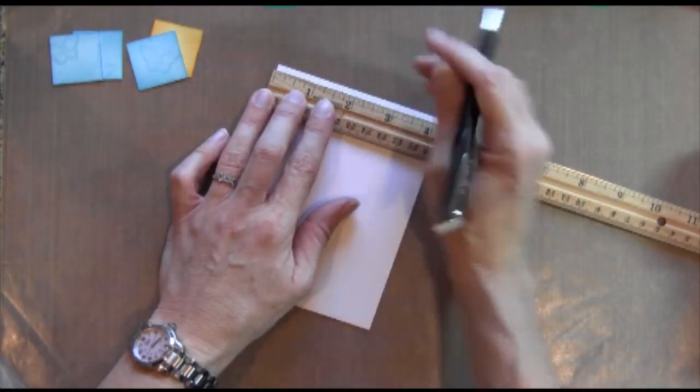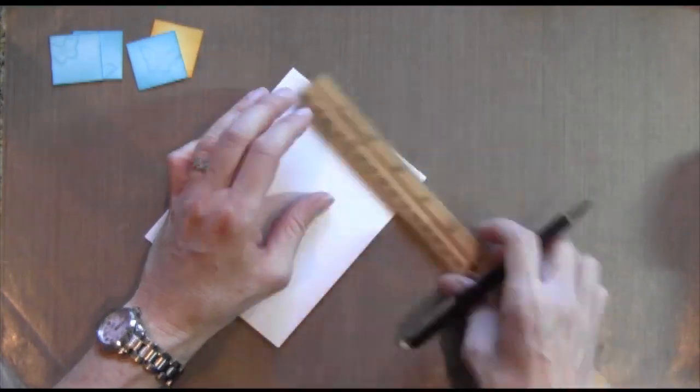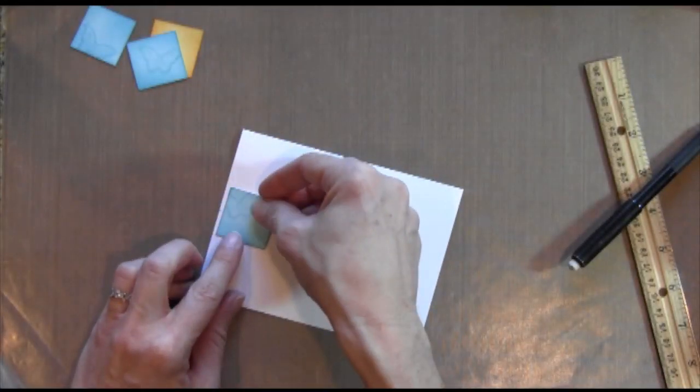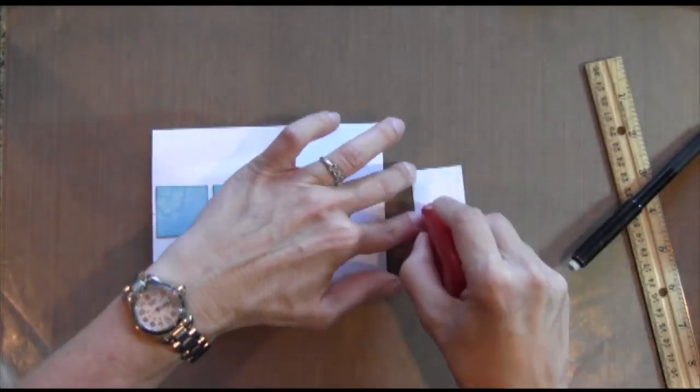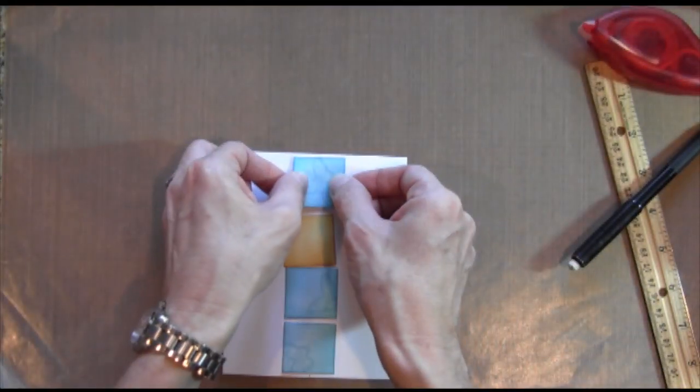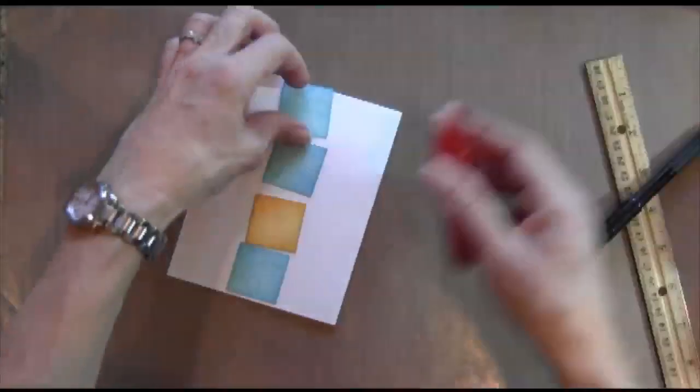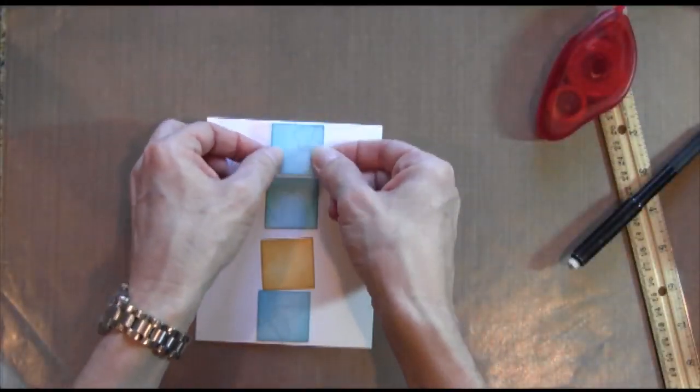And then I took my card base and I marked the center of each side. So it's two and an eighth. And then I placed them down where I wanted them. And then I started on the edges. So I'm going to do one on one edge and then I turned it over and I did the other edge.